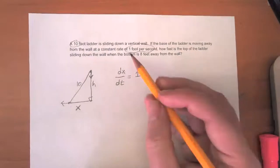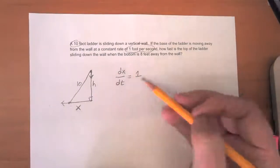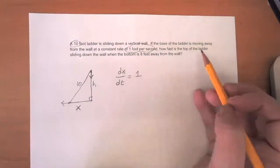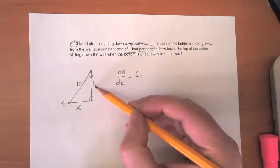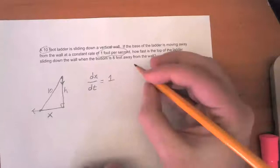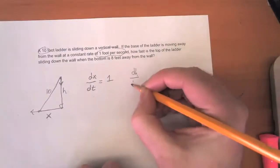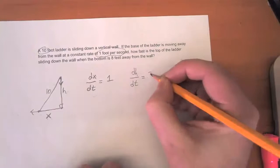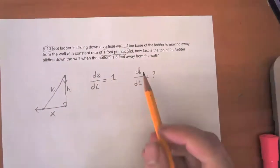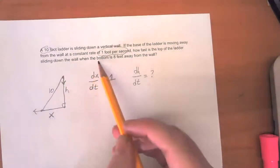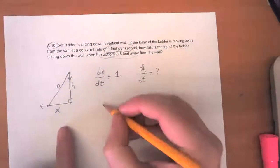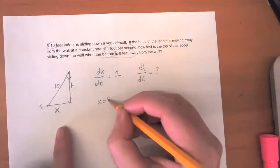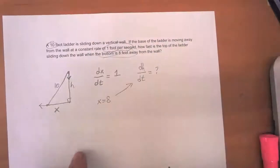And we want to know how fast the top of the ladder is sliding down the wall. So H is also a function that's changing according to time. So we want to figure out what is dh/dt equal to. And the very specific thing that we want to know is that we want to calculate that when the bottom is 8 feet away. So at the very moment that X is equal to 8, we want to calculate what that's equal to.